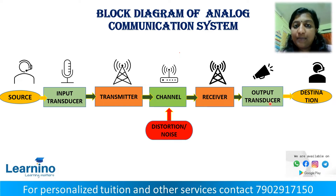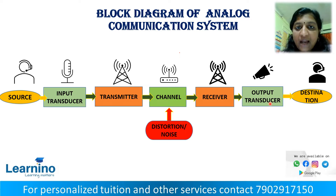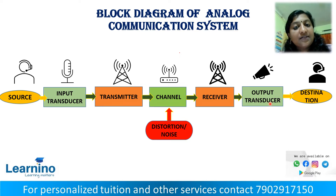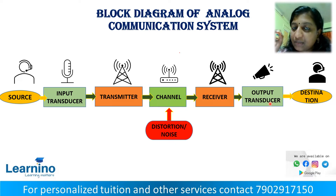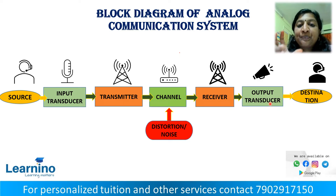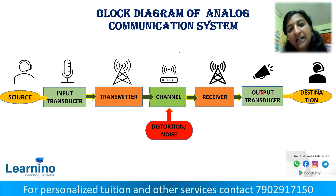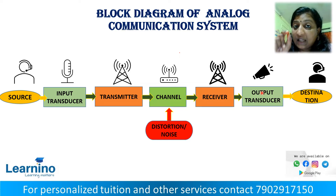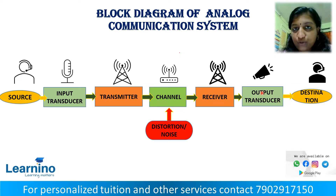Now we have an electrical signal to process at the destination. This is an electrical signal that we analyze. Humans analyze physical signals — this is a physical signal. Electrical signal is converted to a physical signal, like sound. A speaker is an example: the destination phone converts the electrical signal back to a physical sound signal via the output transducer.